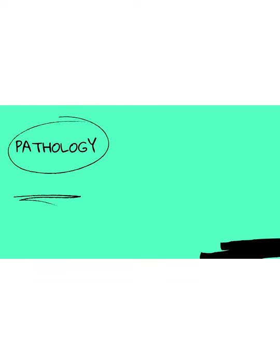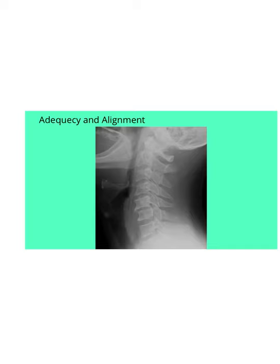Let's put this into practice and look at some pathology. This is a lateral c-spine x-ray of a patient who experienced some trauma. You can see there are no patient details and no indication of time or date. Moving on to adequacy, this x-ray is adequate — we can see all the vertebral levels: C1, 2, 3, 4, 5, 6, 7, and then the top of T1. Looking at alignment, here's the anterior line, the posterior line, and lastly the spinal laminal line.